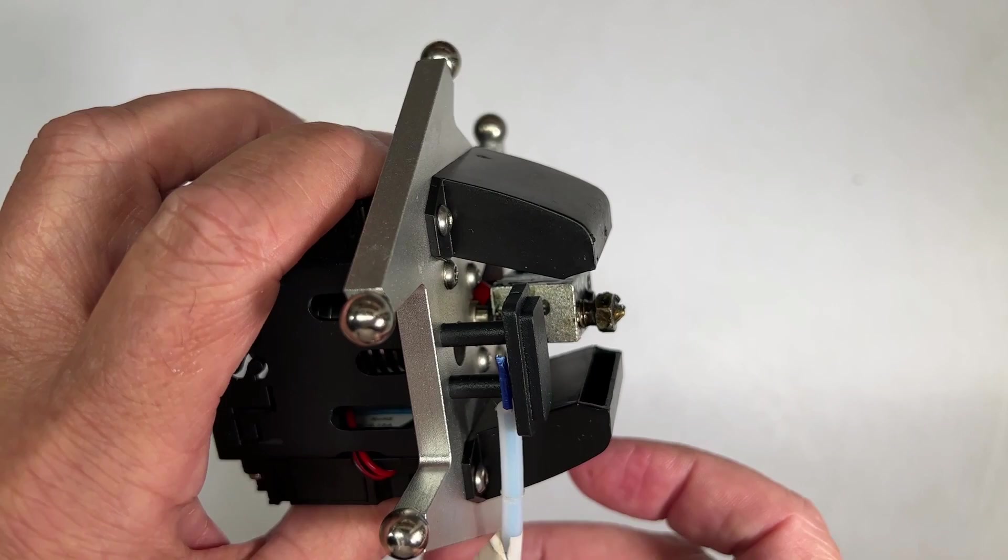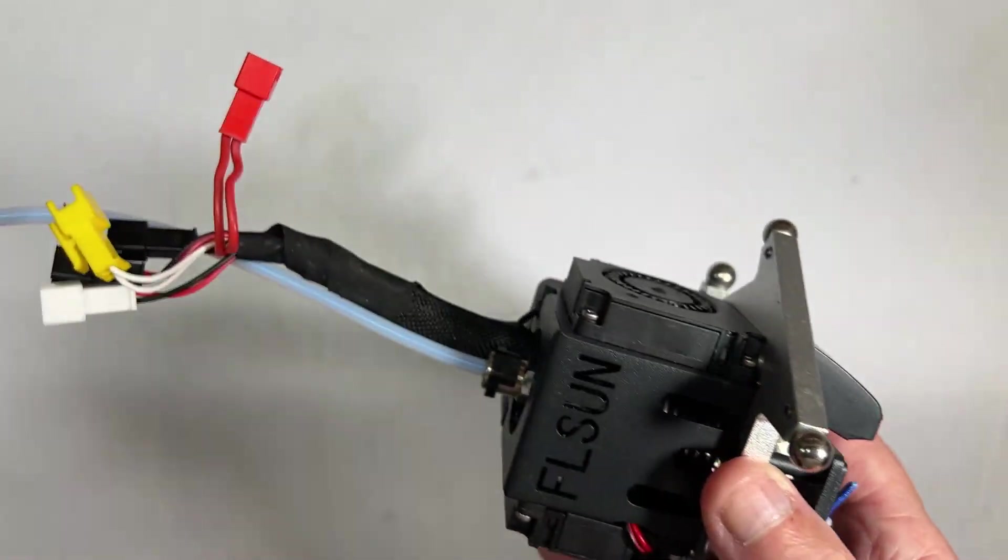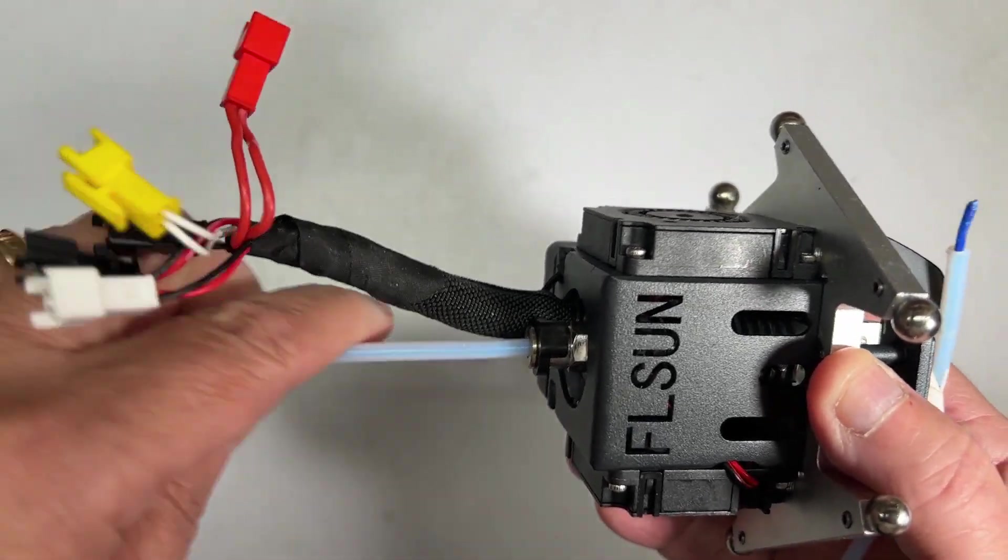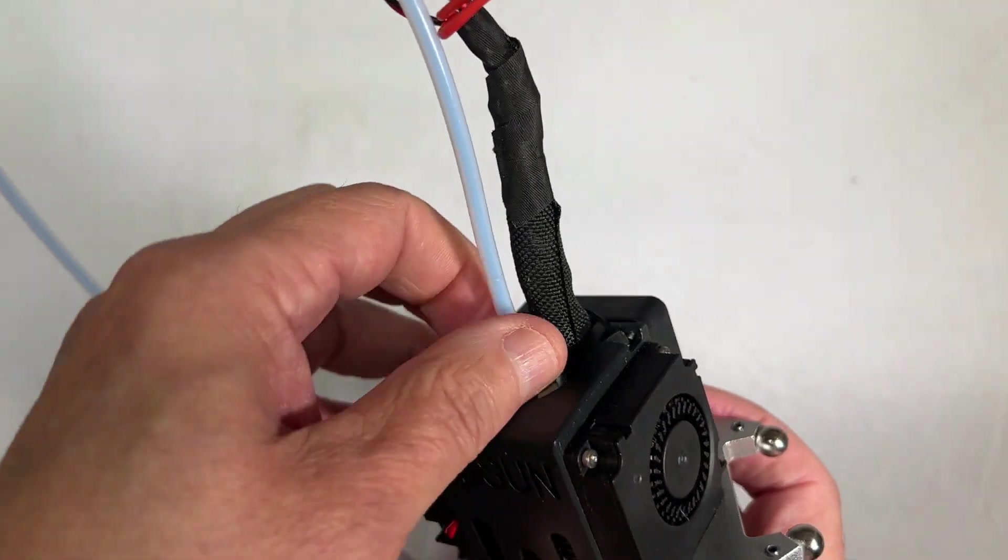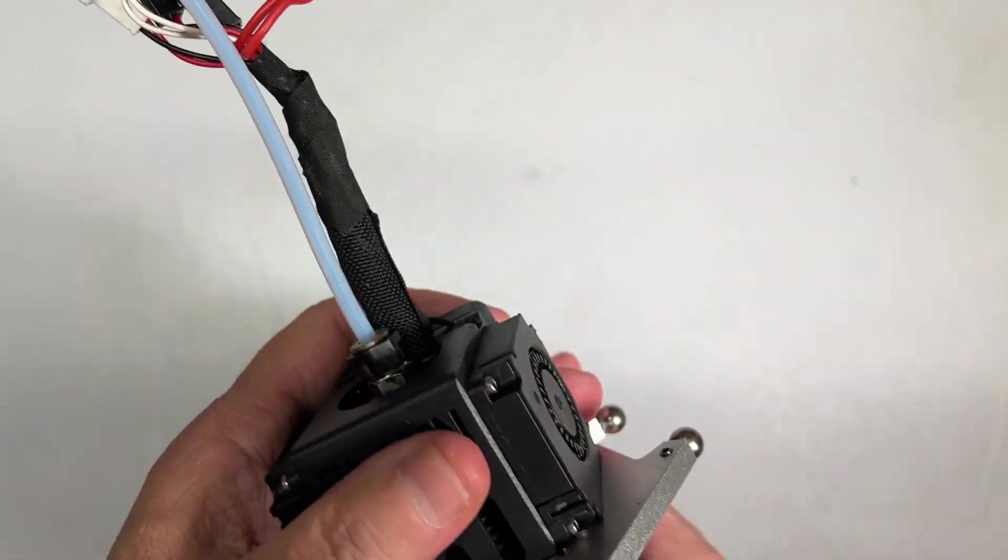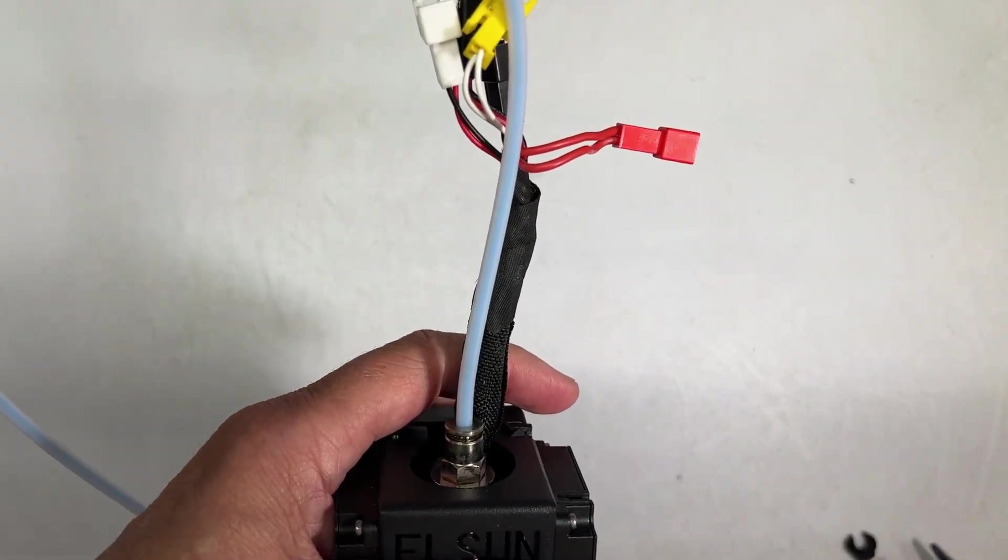You can also see that this one has filament stuck in it. So what I'm going to do is begin with taking the clip off, which in this case the clip is upside down. Take that off.